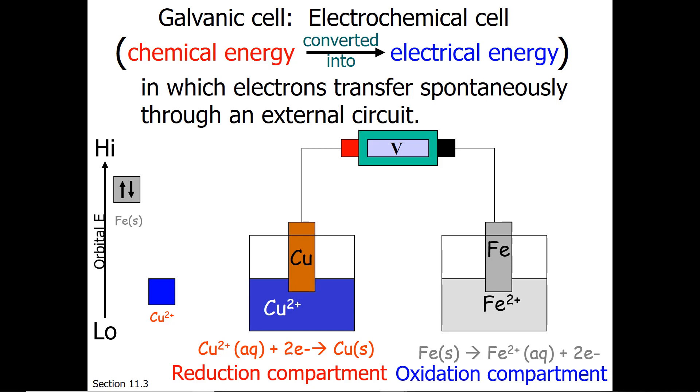In order for the electrons to get from iron to copper, we're going to put a wire between the iron metal and the copper metal. The electrons are going to go from more negative reduction potential to more positive reduction potential.